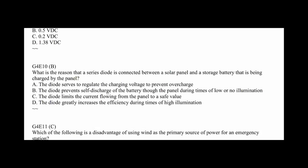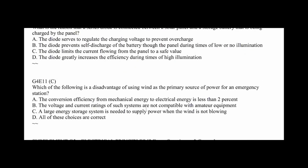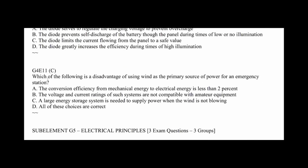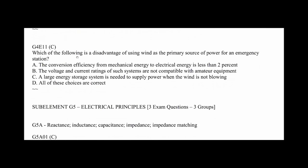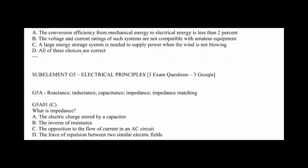G4E10: What is the reason that a series diode is connected between a solar panel and a storage battery? That's pretty obvious. The diode becomes like a one-way, like a check valve. So it's B, the diode prevents self-discharge of the battery through the panel during times of low or no illumination. In other words, current could flow back towards the solar panel, and to stop that you put in a diode. A diode is a one-way gizmo - that's why it's able to rectify AC. G4E11: Which of the following is a disadvantage of wind as the primary source of power for an emergency station? Well, the obvious answer is C, when there is no wind. So it's C, a large energy storage system is needed when the wind is not blowing. Who'd have thought that, huh?